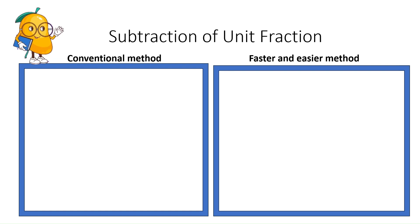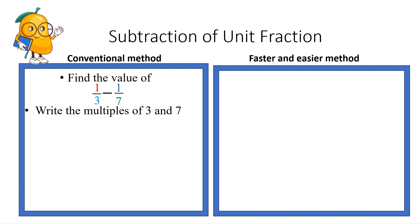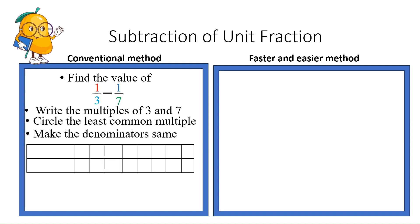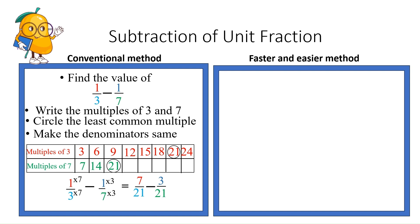Next let us do subtraction of unit fractions. The question here is 1/3 minus 1/7. The method is exactly similar to what we did in addition of unit fractions. Write the multiples of 3 and 7, circle the least common multiple, and make the denominators the same. The least common multiple is 21. For 1/3 minus 1/7, make the denominators 21 as in equivalent fractions, and you get 7/21 minus 3/21, which gives 4/21.